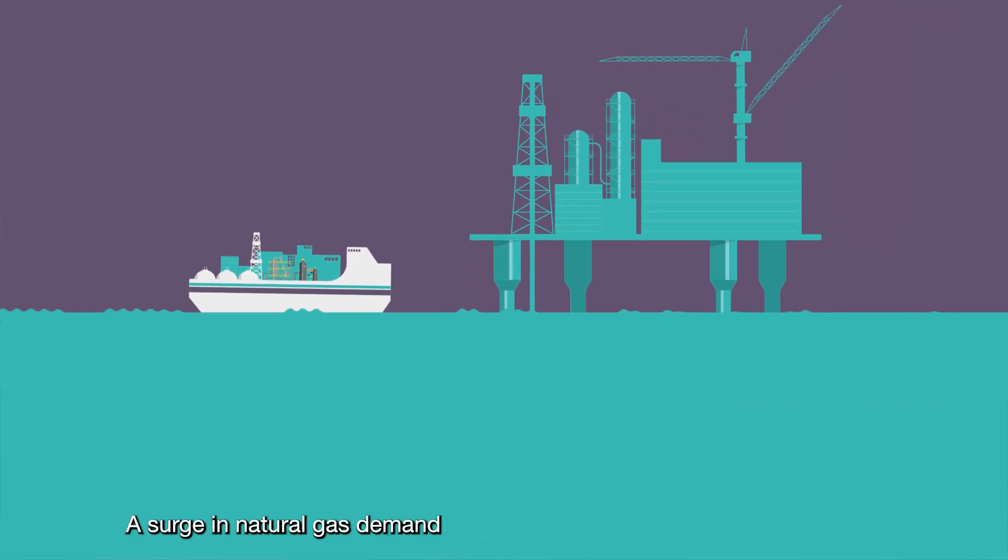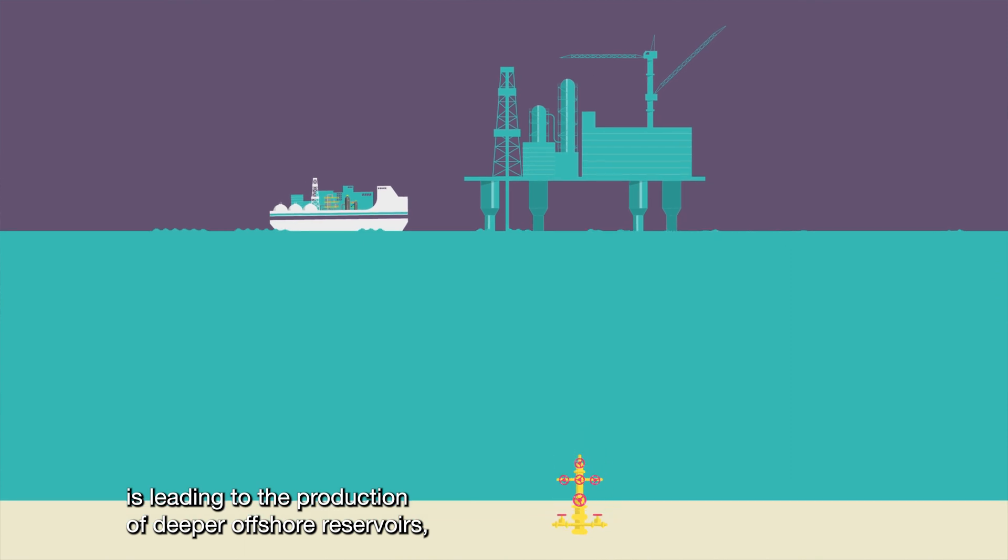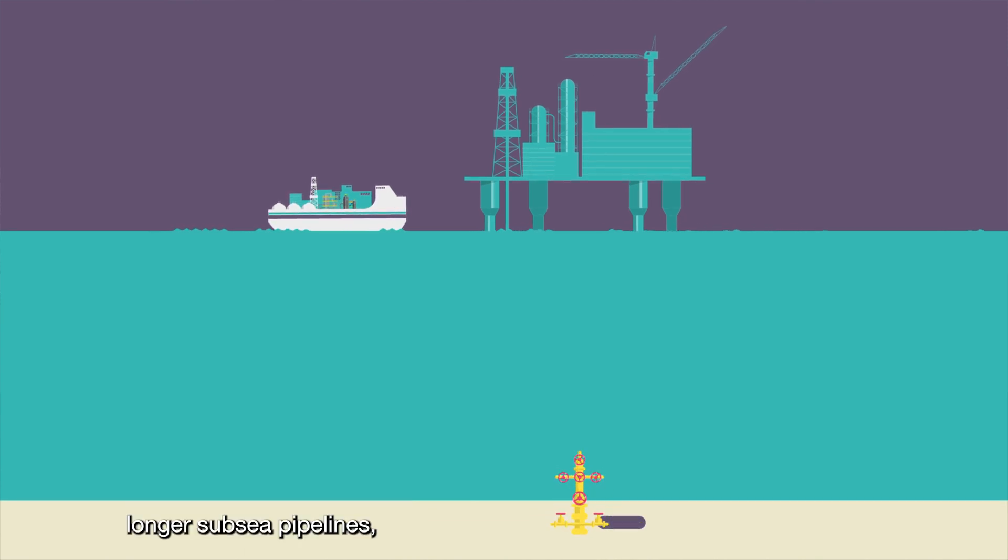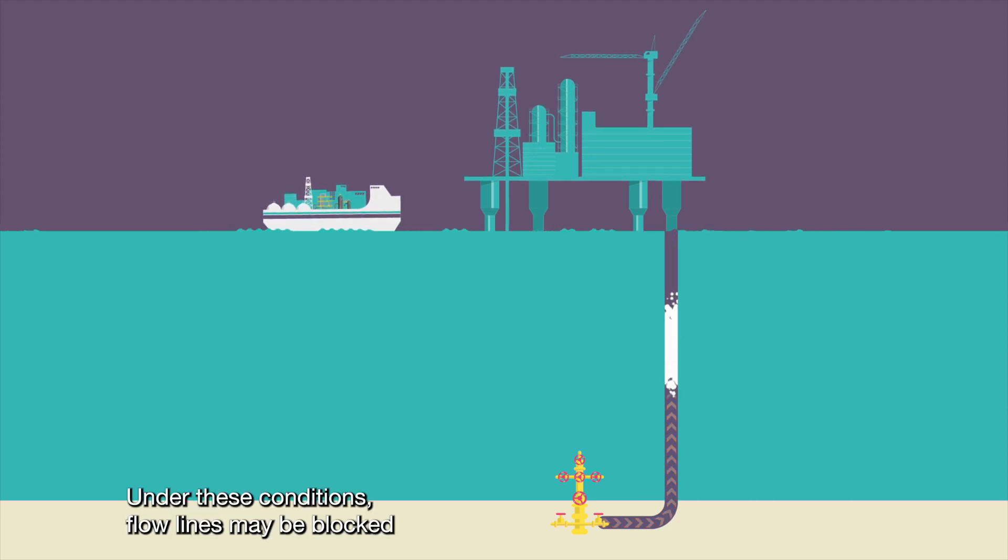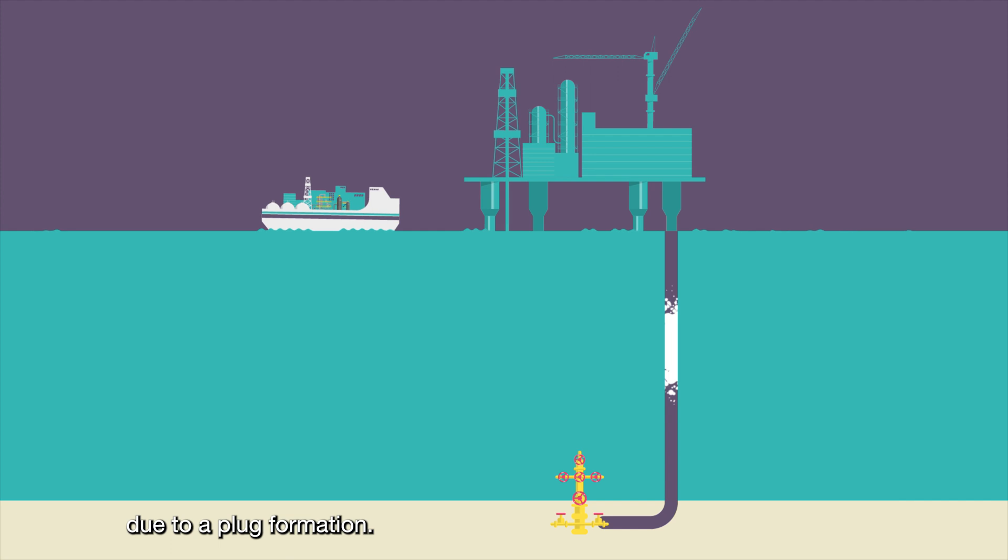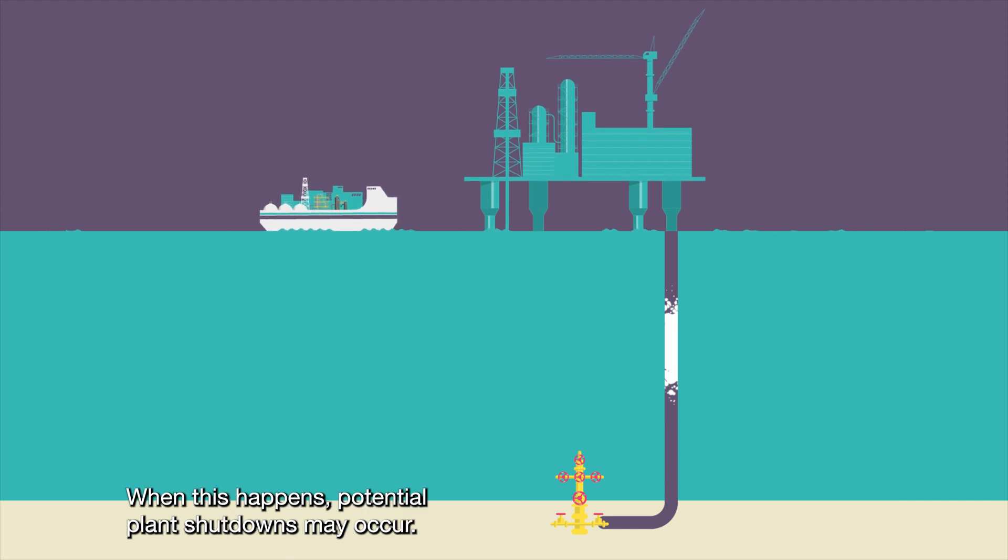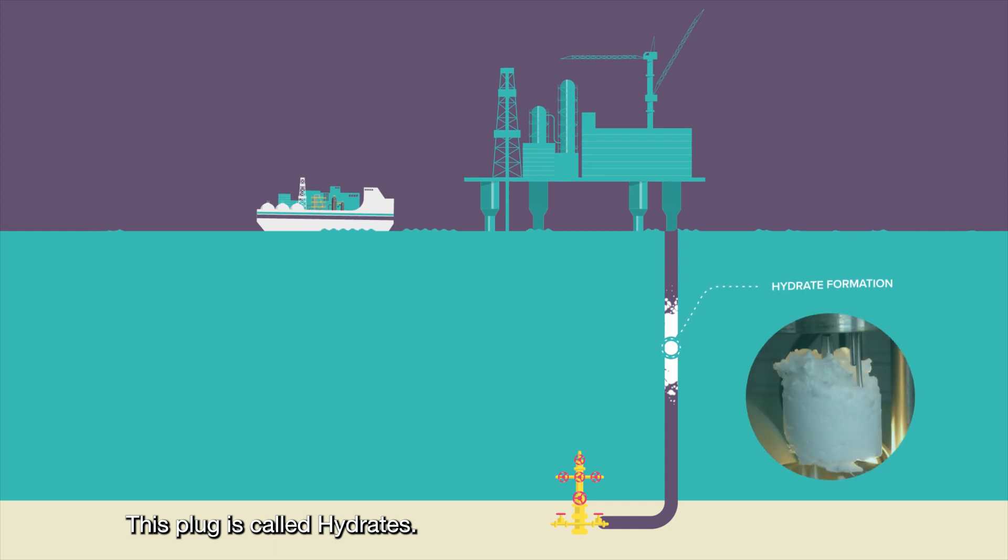A surge in natural gas demand is leading to the production of deeper offshore reservoirs, longer subsea pipelines, higher pressures and lower temperatures. Under these conditions, flow lines may be blocked due to plug formation. When this happens, potential plant shutdowns may occur. This plug is called hydrates.